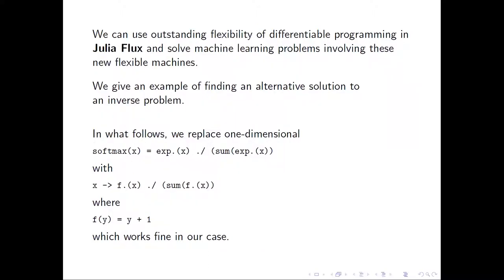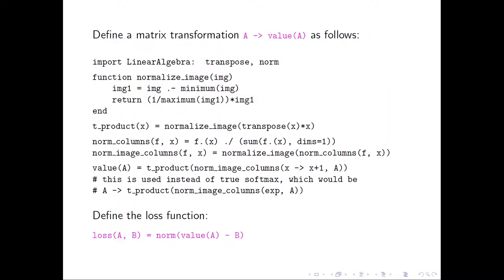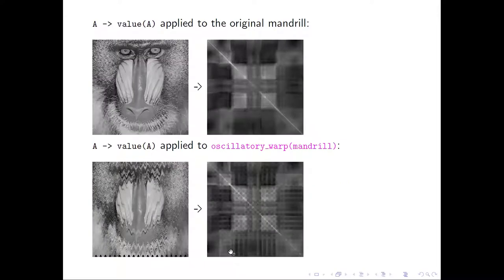Let's try machine learning using great facilities afforded by Julia Flux. Let's define a matrix transformation and the loss function associated with it. So the top row you have seen already, and now let's warp the monkey, and then the result will acquire some grains.